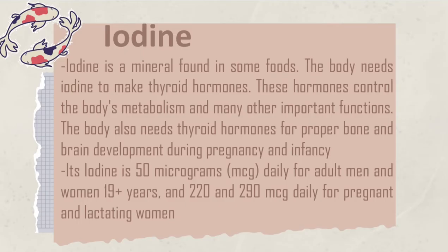Next is iodine. Iodine is a mineral found in some foods. The body needs iodine to make thyroid hormones, which control the body's metabolism and many other important functions. The body also needs thyroid hormones for proper bone and brain development during pregnancy and infancy. Its RDA is 150 micrograms daily for adult men and women 19 and older, and 220 and 290 micrograms daily for pregnant and lactating women.